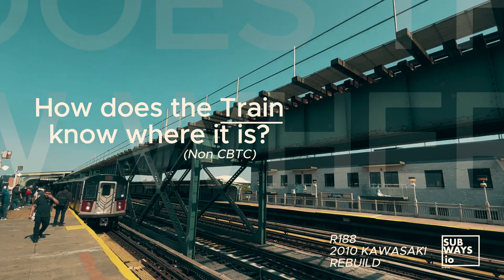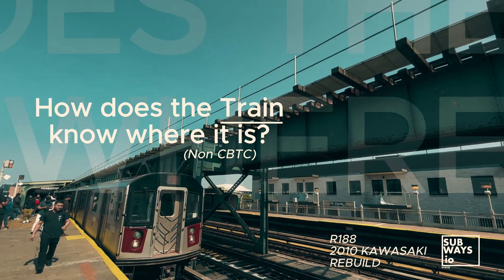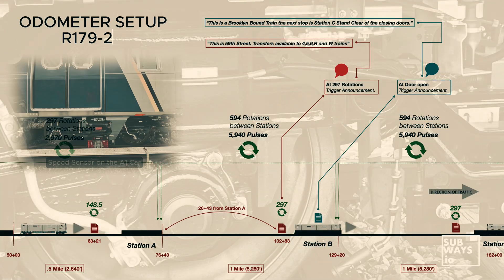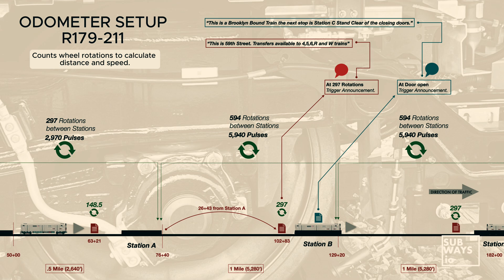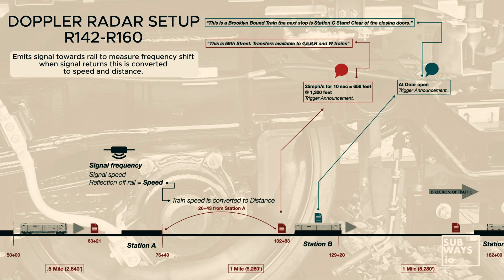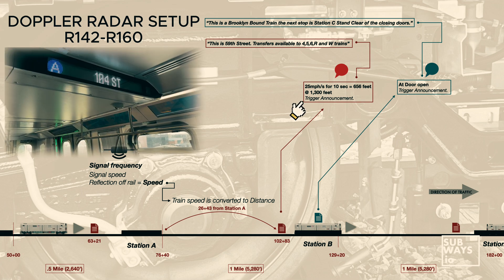How the system knows where the train is: AAS uses data from the train's odometer and internal route files. As the train moves, its position is constantly measured. When the distance traveled matches a programmed value in the route file, the next event — like an announcement or display update — is triggered.